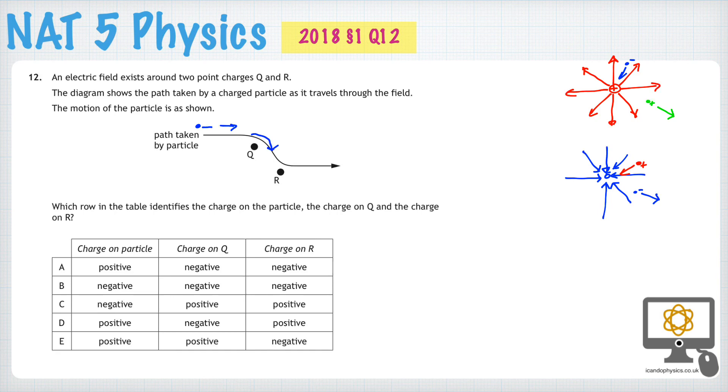it goes around that way, that must mean that this charge is a positive charge because it's been pulled toward it, unlike charges attract. But then the charge meets R. Well, R must be a negative charge because it's been moved away from it.